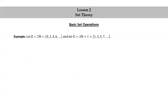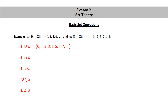Another example. Let 𝔼 = {2n} = {0, 2, 4, 6, ...}, the even natural numbers. And let 𝕆 = {2n+1} = {1, 3, 5, 7, ...}, the set of odd natural numbers. Let's compute the union, intersection, the two differences, and the symmetric difference between 𝔼 and 𝕆. Well, 𝔼 union 𝕆 is {0, 1, 2, 3, 4, 5, 6, 7, ...}, that's just the set of natural numbers ℕ. The intersection of 𝔼 and 𝕆 is the empty set — they have nothing in common. 𝔼 minus 𝕆 is 𝔼, 𝕆 minus 𝔼 is 𝕆, and the symmetric difference between 𝔼 and 𝕆 is 𝔼 union 𝕆, which is ℕ.